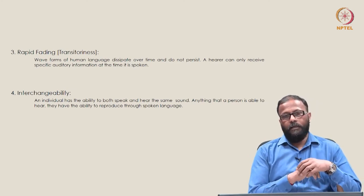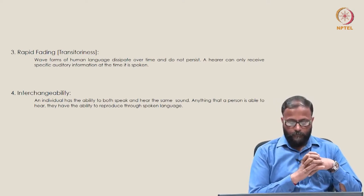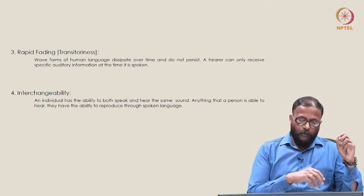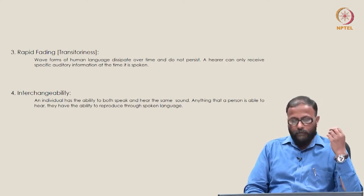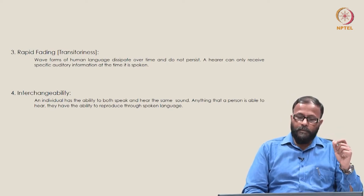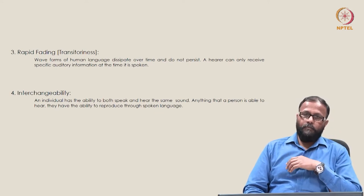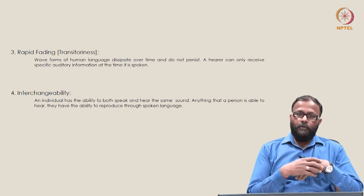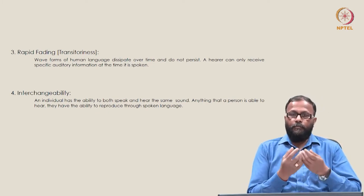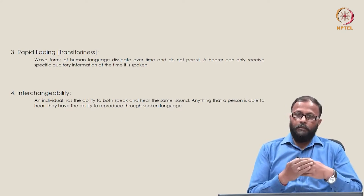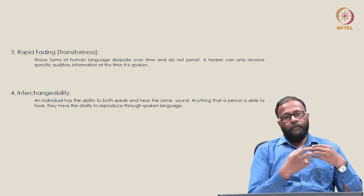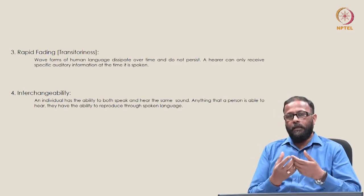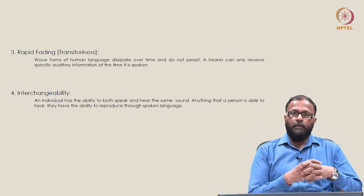The fourth design feature is interchangeability. An individual has the ability to both speak and hear the same sound — anything a person is able to hear, they have the ability to reproduce through spoken language. You perform both roles: when you produce sound, you are simultaneously a listener of your own speech. You produce and you receive simultaneously; the roles are reversible and we have the ability to produce anything that we hear. This is interchangeability.